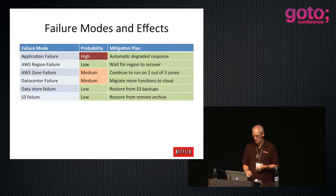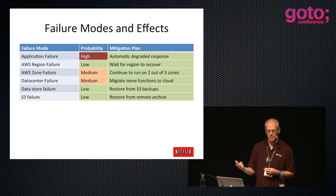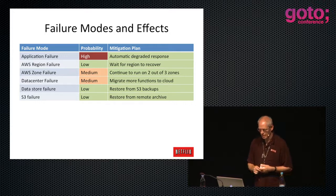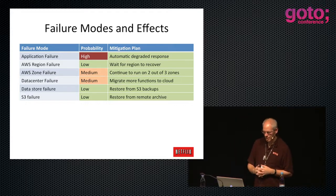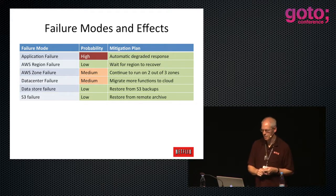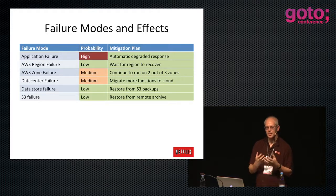Let's look at failure modes and their effects. We've got failure mode, probability - rated high if it happens every week because we deploy new code very aggressively, low if we've basically never seen it, medium if it happens often enough that we want a mitigation strategy. If the application fails, that's the circuit breaker pattern or dependency command, as we call it - your software has to be able to deal with the fact that everyone you're calling might be dead.